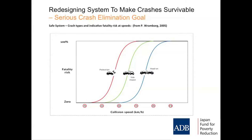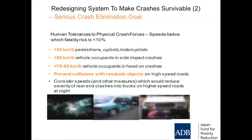How you retrofit a whole network to achieve this is challenging, but it can be done over time. We also have to prevent collisions with roadside objects on high-speed roads. If you run off the road and hit a pole or a tree, it's a very dangerous crash type that will kill you probably at speeds of about 40 or 50 kilometres an hour. So you've got to put in barriers or get rid of the trees or poles.